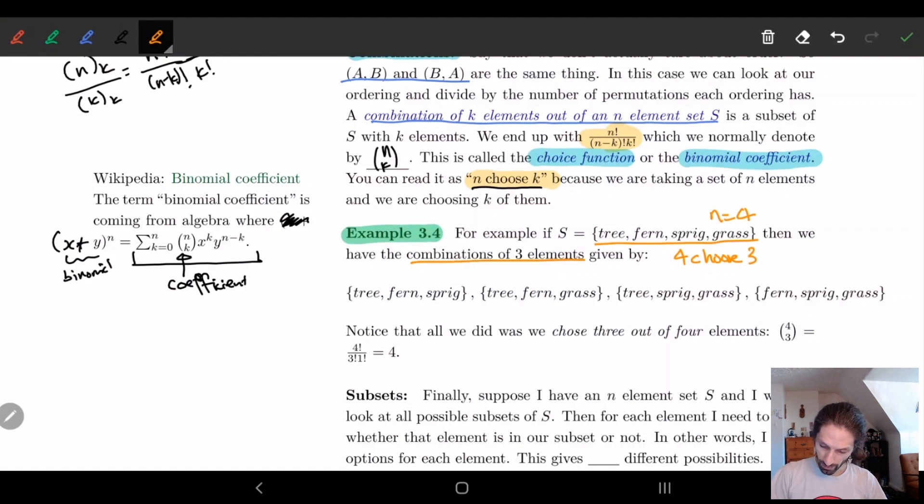So 4 choose 3 is equal to 4 factorial over 3 factorial times 1 factorial. And this is going to be equal to 4. So this is 4 times 3 times 2 times 1 over 3 times 2 times 1 times 1. These all cancel. And we're just left with 4. So I should end up with 4 elements. And we can kind of actually see this here.